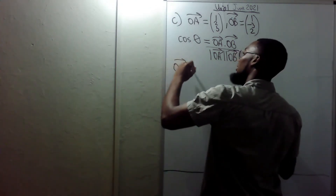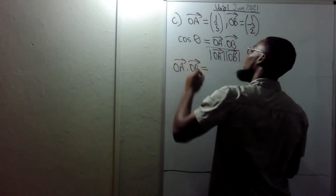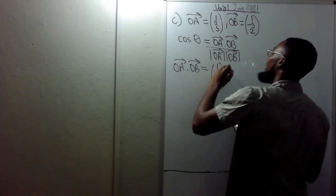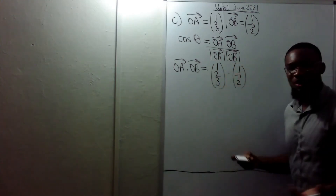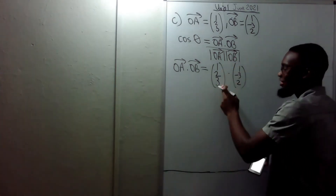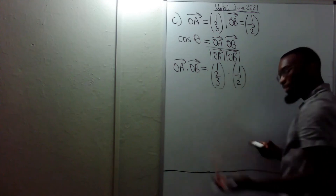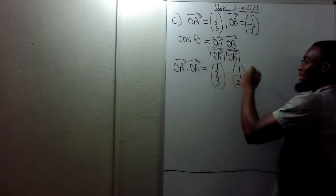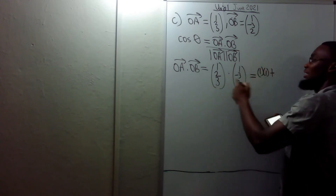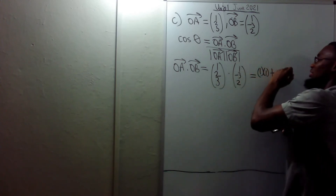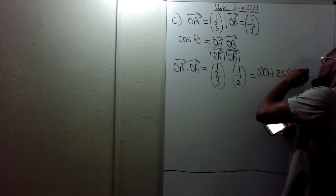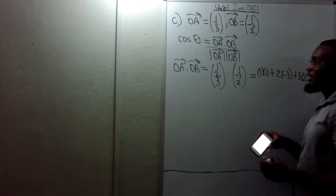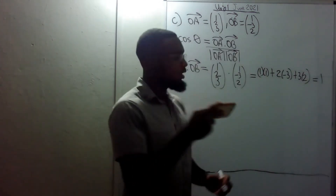So OA · OB equals (1, 2, 3) · (1, −3, 2) = 1×1 plus 2×(−3) plus 3×2 = 1 minus 6 plus 6 = 1. So OA · OB equals 1.